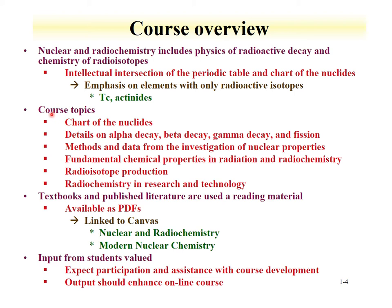The course topics include the chart of the nuclides, details on alpha decay, beta decay, gamma decay, and fission — you should understand the differences among these by the end of the course. We'll cover methods and data obtained from investigating nuclear properties, fundamental chemical properties involved in radiation and radiochemistry, particularly how they intersect with elements only available as radioactive isotopes such as technetium and the actinides. We'll also discuss how isotopes are produced and how radiochemistry is used in research and technology.